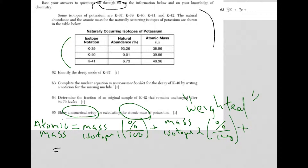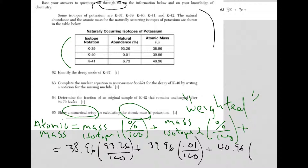I'll do it in black. So the mass of isotope 1, in other words, potassium-39. The mass is 38.96 times the percent is 93.26 divided by 100 plus mass of isotope 2, 39.96 times 0.01 divided by 100 plus the same thing now for isotope 3, which the mass is 40.96 times 6.73 divided by 100.